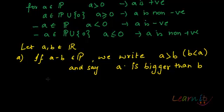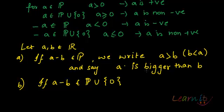And number two: if a minus b belongs to P union zero, we say that a is greater than or equal to b, or b is less than or equal to a.